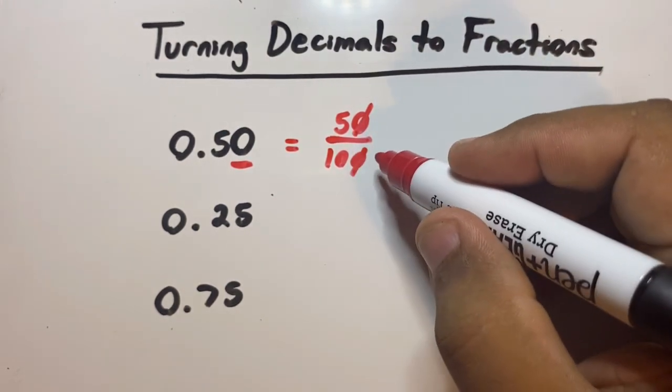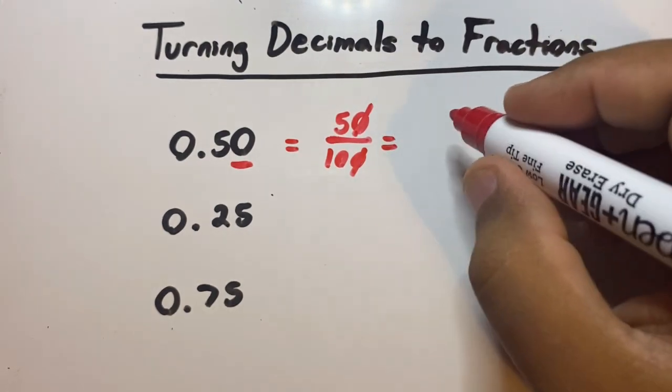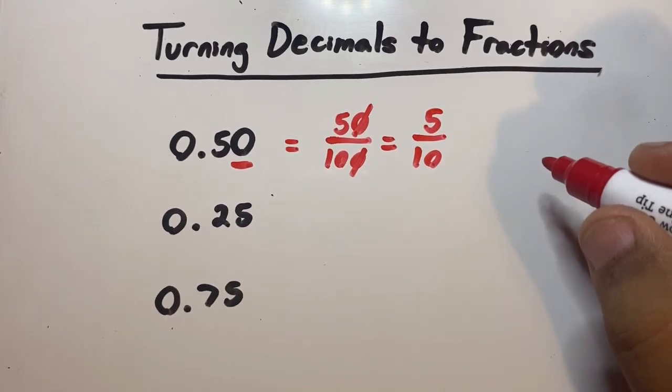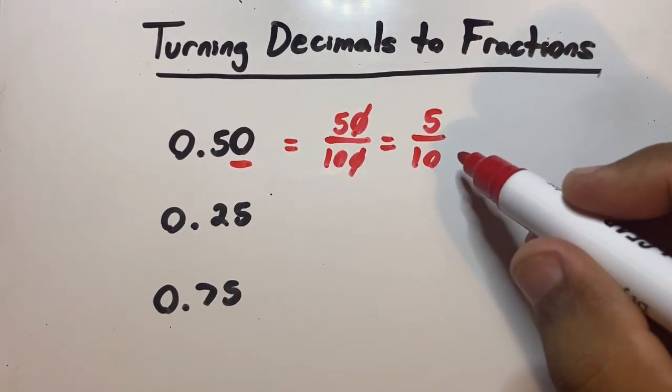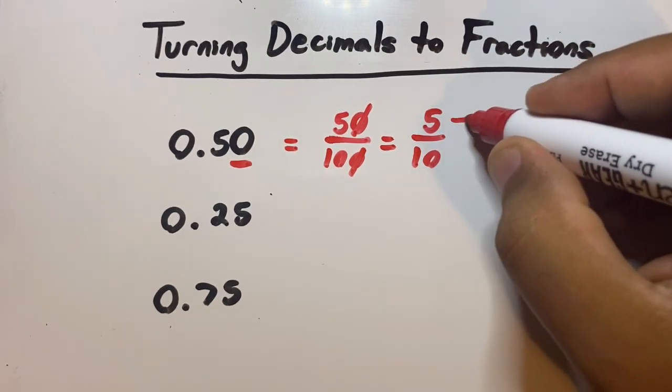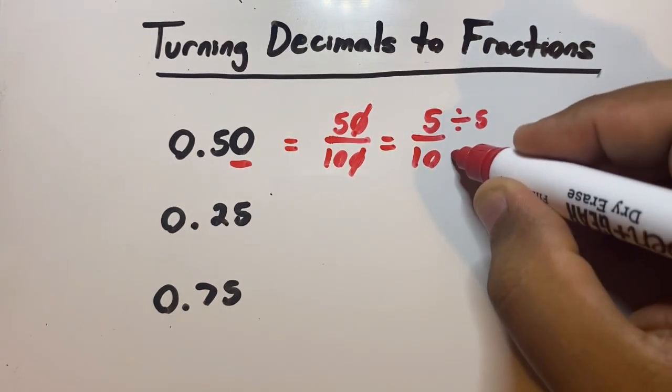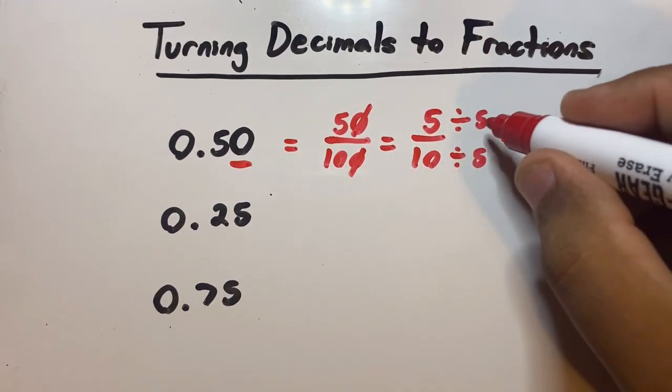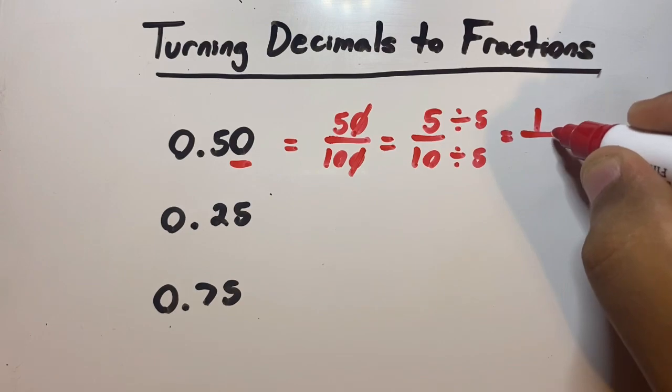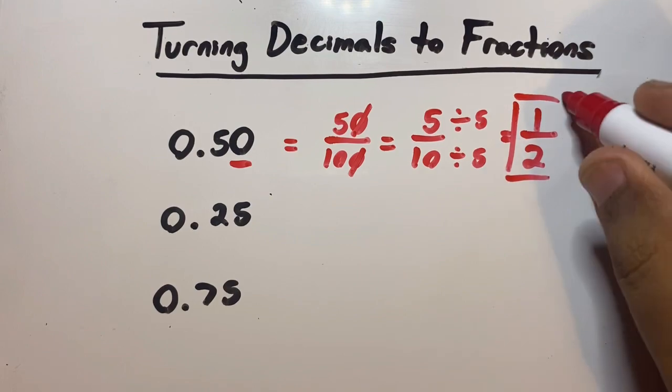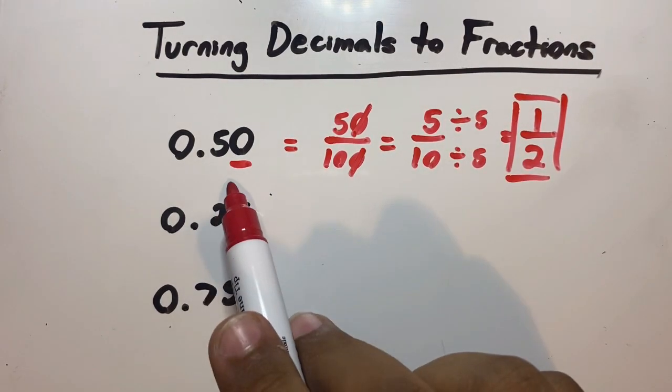Now we can make this smaller. Both the 5 and the 10 are divisible by 5. Five goes inside 5 one time, and 5 goes inside 10 two times. This is the answer. So 0.50 is 1 over 2. Very good.